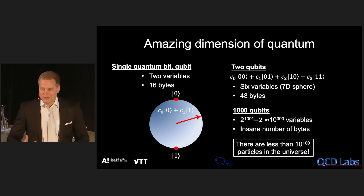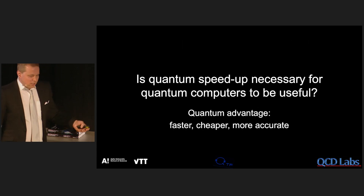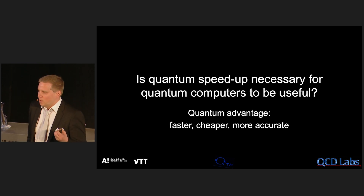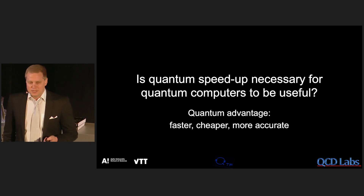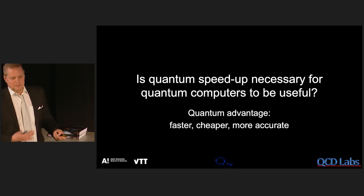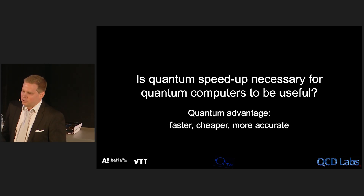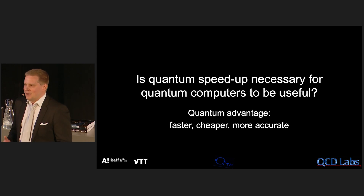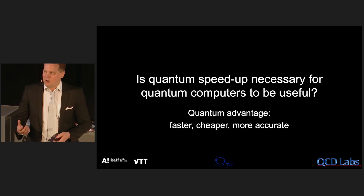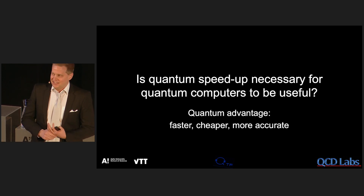Whether that something becomes reality and useful, we will see. We were talking about quantum computers being faster than classical computers because they take shortcuts. But is that the only way quantum computers can be useful? The answer is no. Quantum advantage means that quantum computers can be faster, cheaper, or more accurate than classical computers. For example, if you are doing risk analysis in finance, a more accurate prediction is worth a lot of money even if it comes at the same price and time. However, we are not at the quantum advantage stage yet globally.